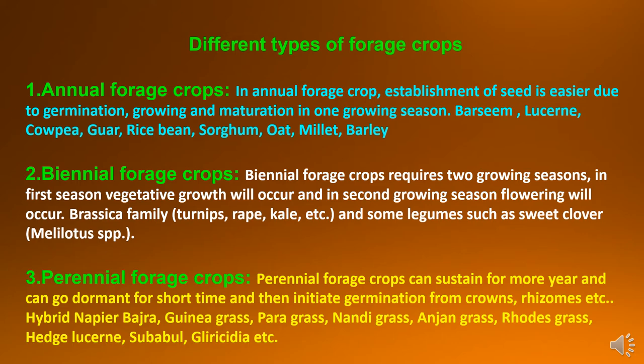Second is biennial forage crops. Biennial forage crops require two growing seasons. In the first season, vegetative growth will occur and in the second growing season, flowering will occur. Brassica family like turnips, grapes and some legumes such as sweet clover are falling under biennial forage crops.